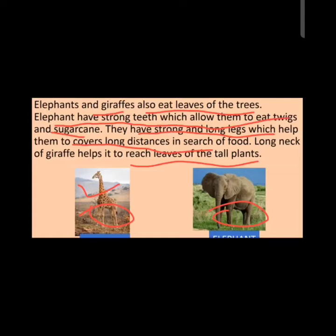Some birds like parrots are also herbivores — they eat only fruits and nuts. Parrots have a strong curved beak and a strong tongue to take their food. Small animals like rat, squirrel, and rabbit are known as rodents because they have sharp and long front teeth, and some rodents are also herbivores.